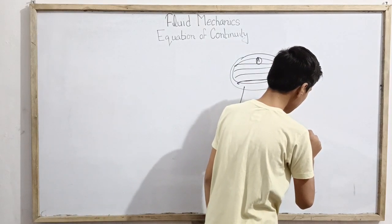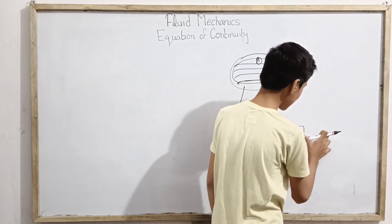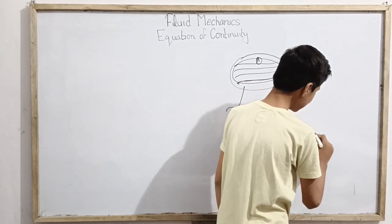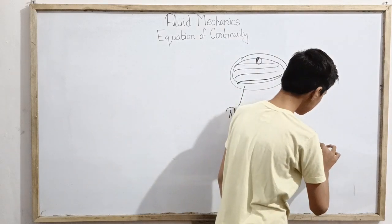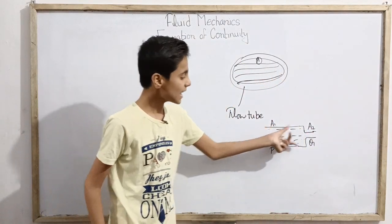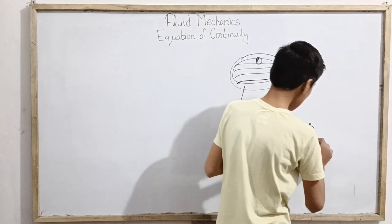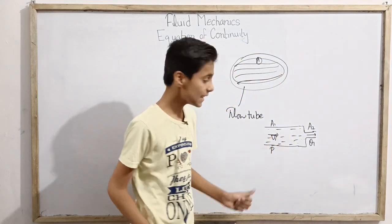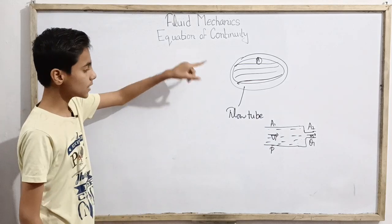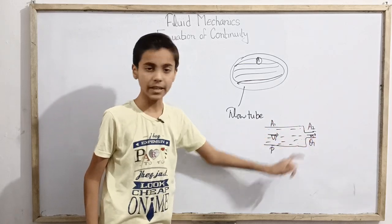Then we have a different part of the flow tube where the tube compresses a little bit — it narrows. In this region the area is A2, so the flow tube is narrower here. There is no longer velocity vector V1; instead a different velocity vector V2 is attained. So the equation of continuity will tell us the relation between A1, A2, vector V1 and vector V2.